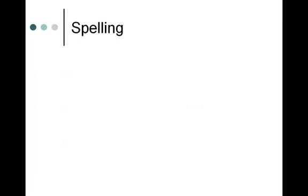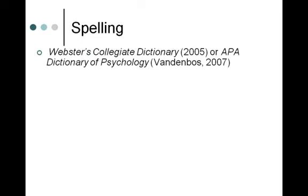Moving on to spelling: the definitive sources for how to spell things are Webster's Collegiate Dictionary or the APA Dictionary of Psychology for psychological terms not in a standard dictionary. If you found something spelled differently on the web versus in one of these sources, your spelling would be considered wrong in the eyes of APA. Spell check is usually right, except for names — but spell check isn't always right. You can't assume spell check has your back.